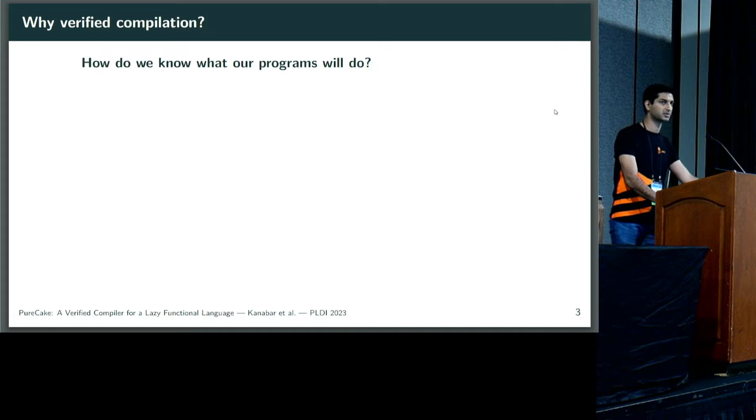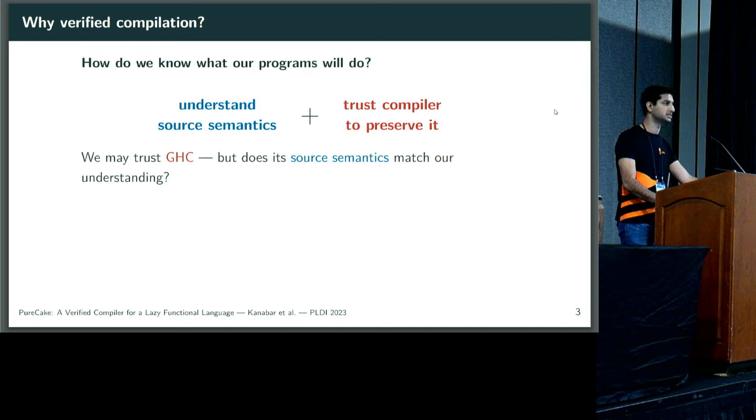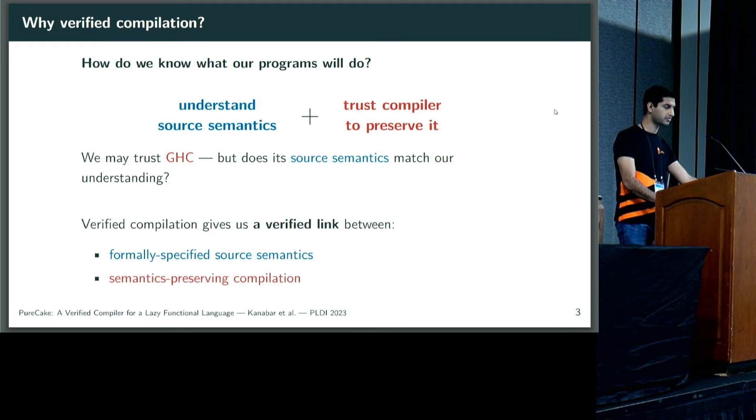We focus particularly on verified compilation because we're worried about reasoning about our programs. How do we reason about what actually executes on the hardware? This comes down to knowing two things: What do our source programs do, i.e., what are their semantics? And second, do we have a compiler that will definitely preserve that same understanding of our semantics? We might trust industrial-strength compilers like GHC to be bug-free in all the ways that matter, but do we trust that the semantics it implicitly implements is really the one inside our own heads? Verified compilation gives us a verified link between a formally specified, clear source semantics, which we can reason about, and a compiler which definitely preserves that same semantics.